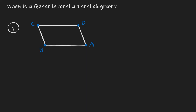Here we have a quadrilateral ABCD. We don't know that this is a parallelogram. What properties need to occur for us to conclude that it is? If the givens are that opposite sides are congruent — if CD is congruent to BA, and CB is congruent to DA — then if we are given a quadrilateral with opposite sides congruent to each other, we can conclude that we have a parallelogram.